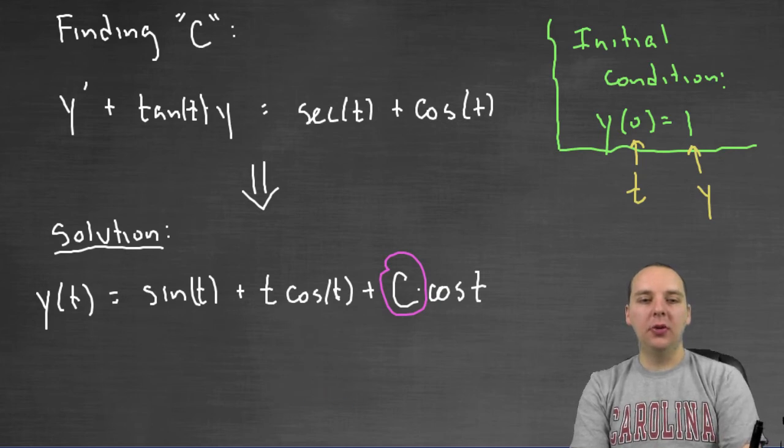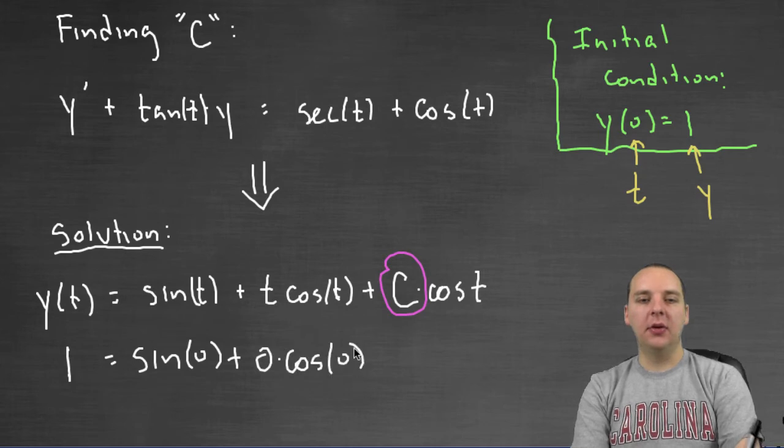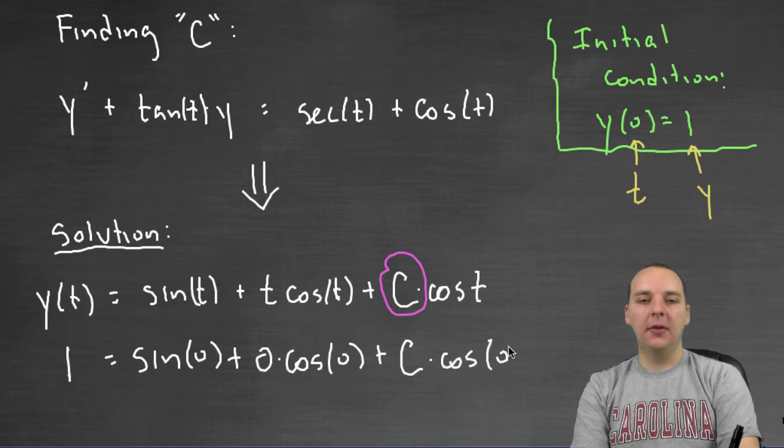So it's pretty straightforward, you just plug in 1 for y and you plug in 0 for t: sine 0 plus 0 times cosine 0 plus C times cosine of 0.